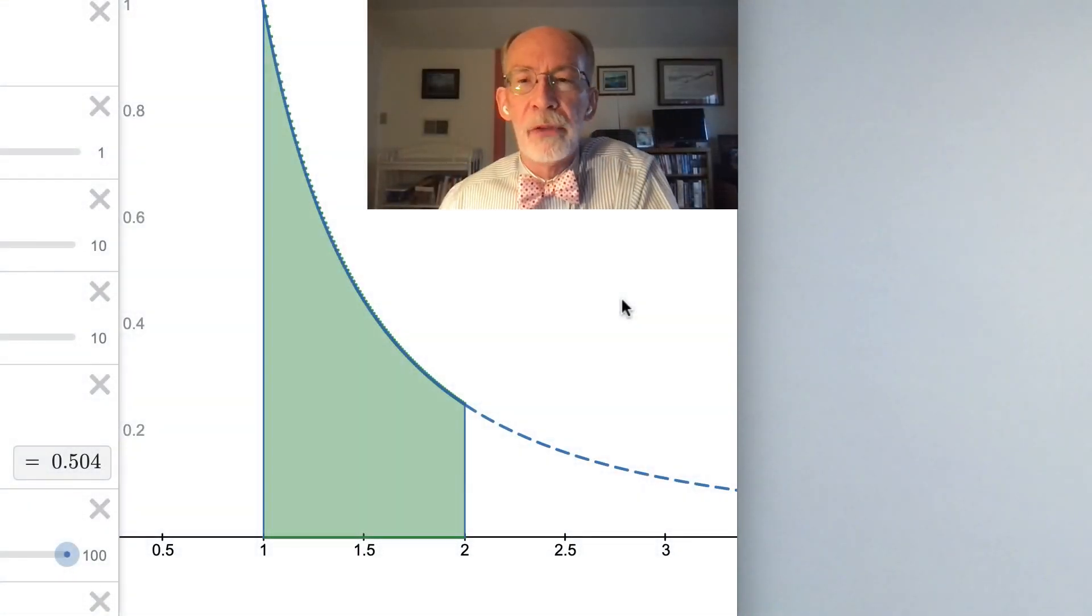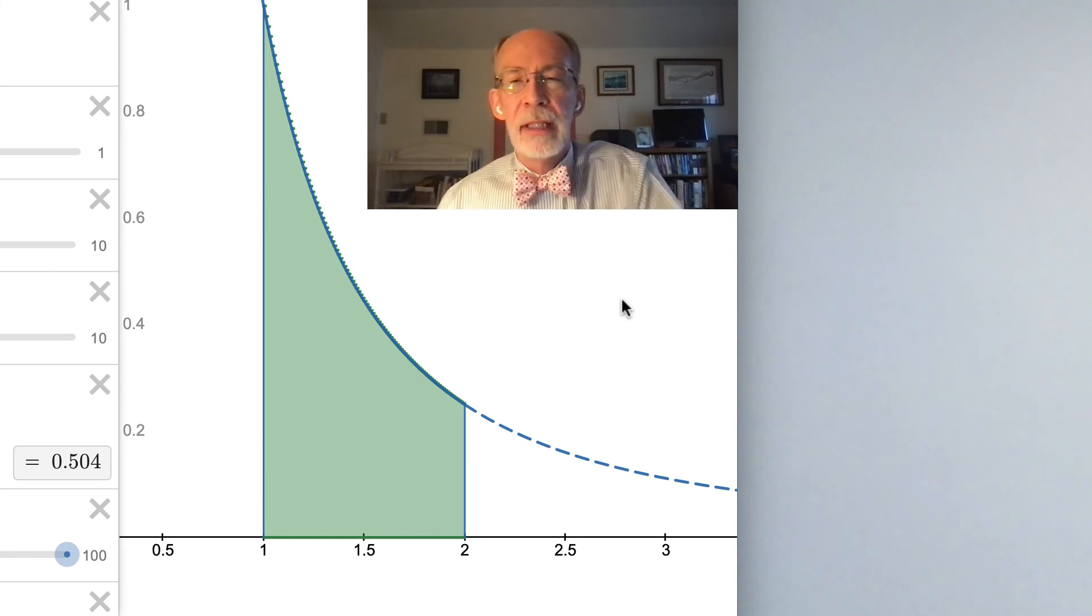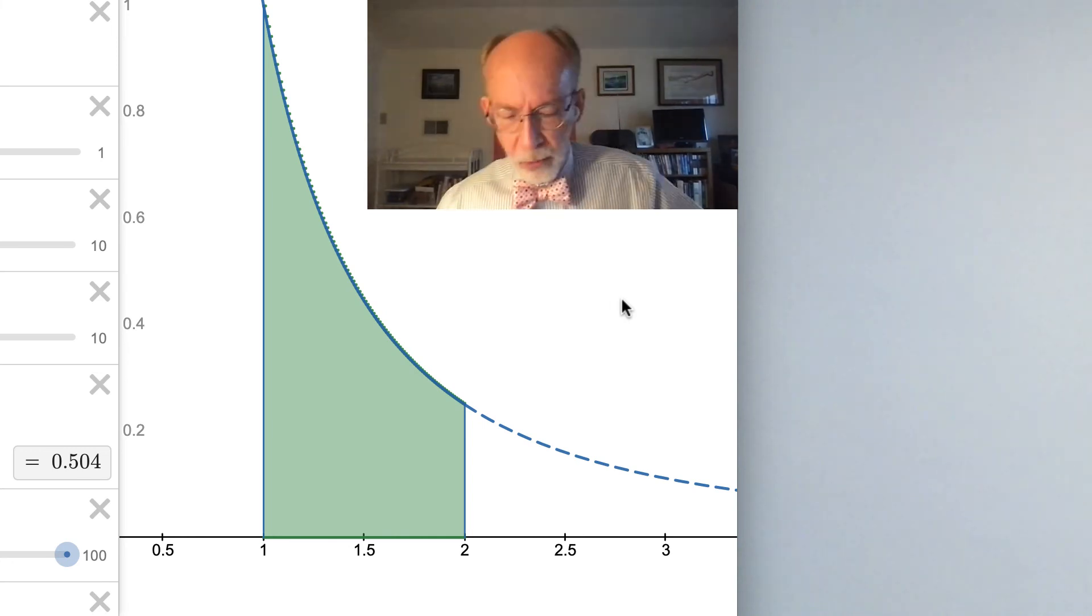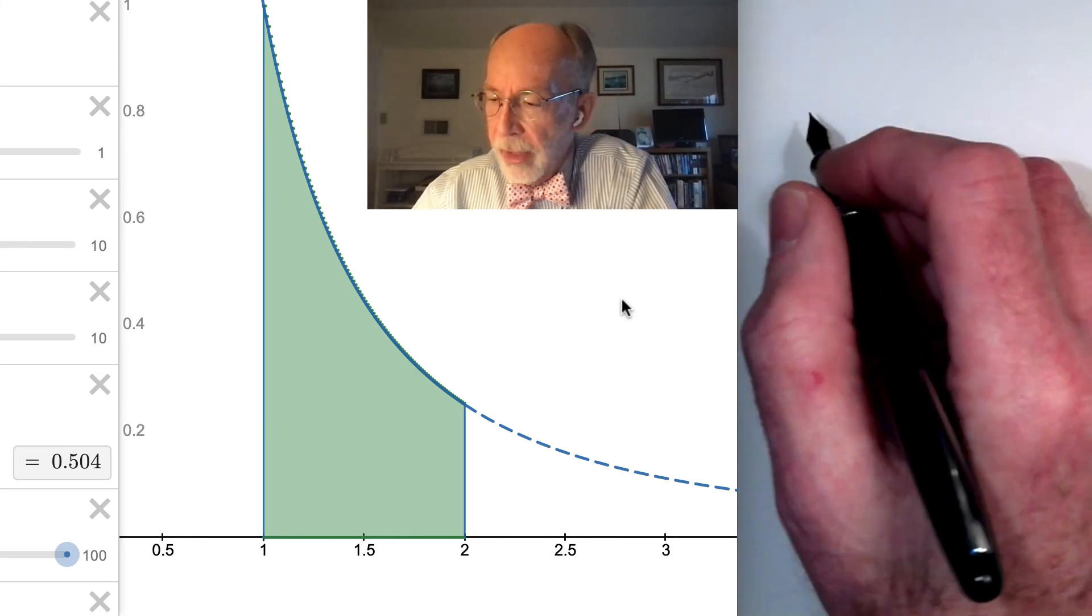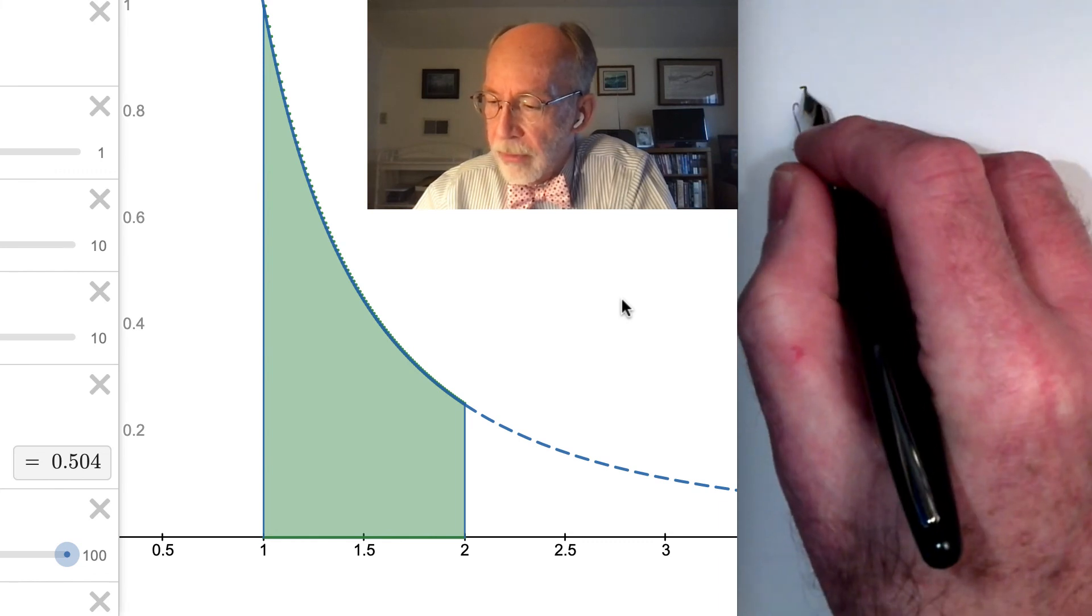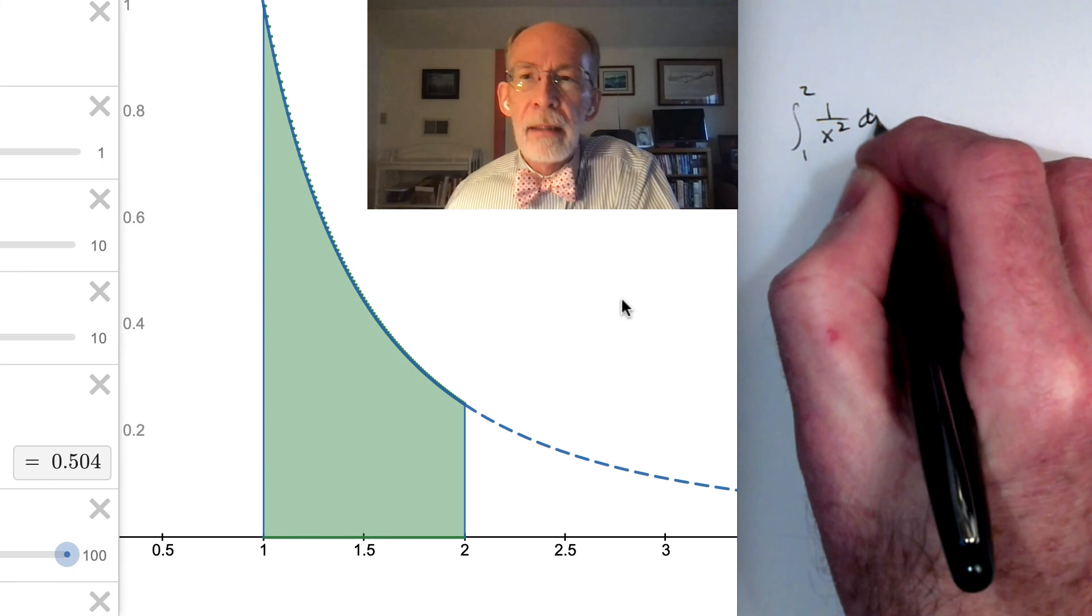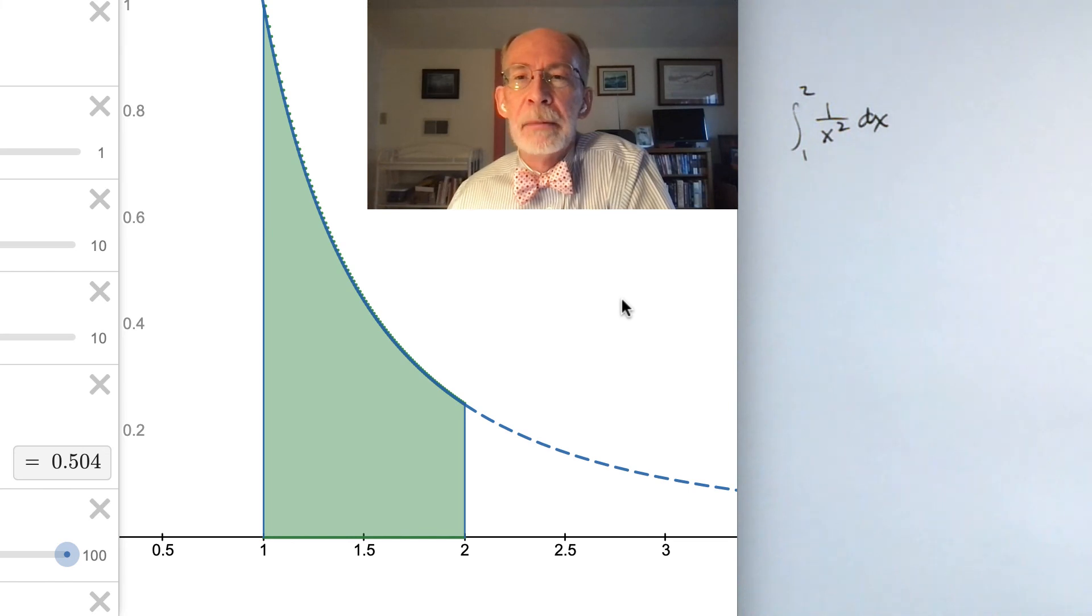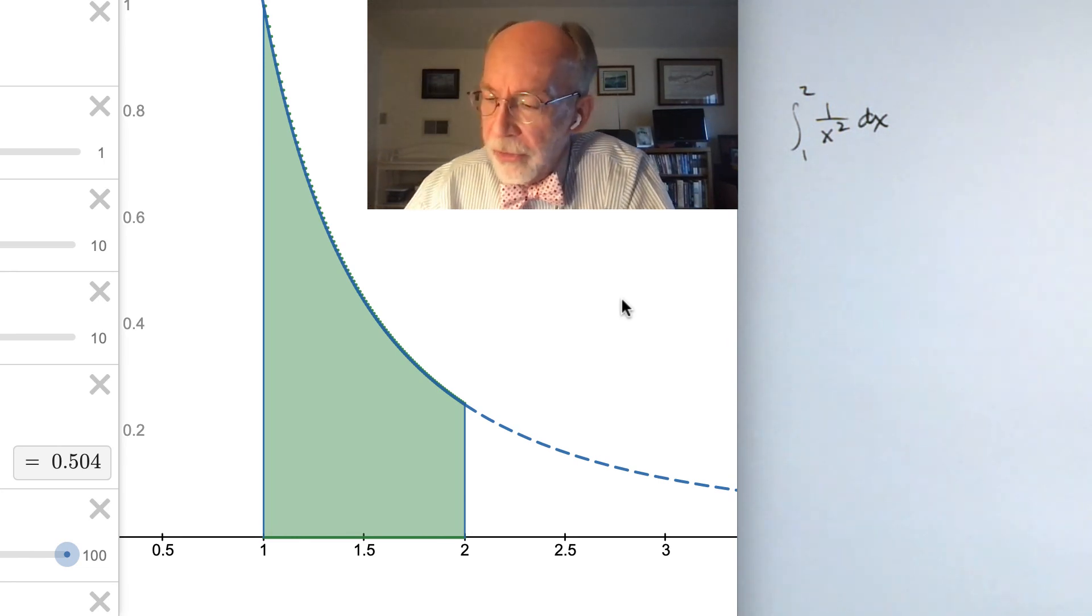Let's take a look at one more example that will tend to confirm all that we've said, and also give us an opportunity to take a look at some notational conventions as well. So let's imagine that we want to know the integral from 1 to 2 of 1 over x squared dx. Well, you have, I'm sure, frequently encountered situations where you've differentiated 1 over x and gotten -1 over x squared. So this integrand ought to be the derivative of -1 over x. And I want to show you some notation that is typically used in these situations.